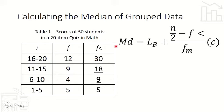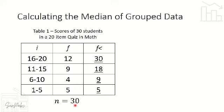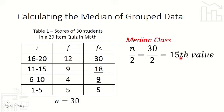Now let's go back to the formula. First, identify the median class by dividing the total frequency by 2. Total frequency is 30, divided by 2 equals 15. So we look for the class interval that contains the 15th value by checking the F less than column.